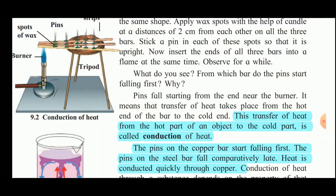The pins on the copper rod fall first because copper is the best conductor of heat. The pins on the steel bar fall comparatively late, and then on the aluminium rod last. Depending on how good a conductor the metal is, the pins fall accordingly. The pins also fall from the hotter end to the colder end — the end nearest the burner becomes hot first.